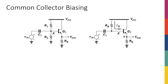The last thing to mention is biasing of common collector stages. There's nothing new — it's exactly like what we do with common emitter stages. We can either use simple biasing with a single R_B, or a resistive divider. Since the input is at the base, we do exactly what we did with common emitter, and all the biasing discussions for common emitter apply here as well.